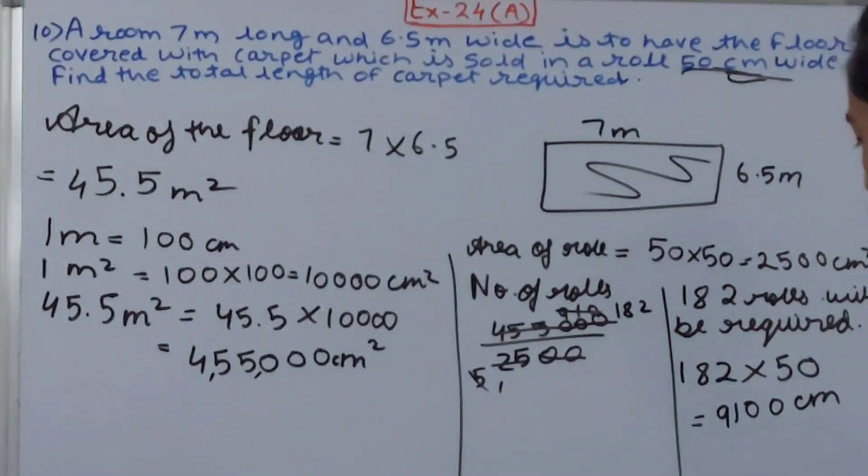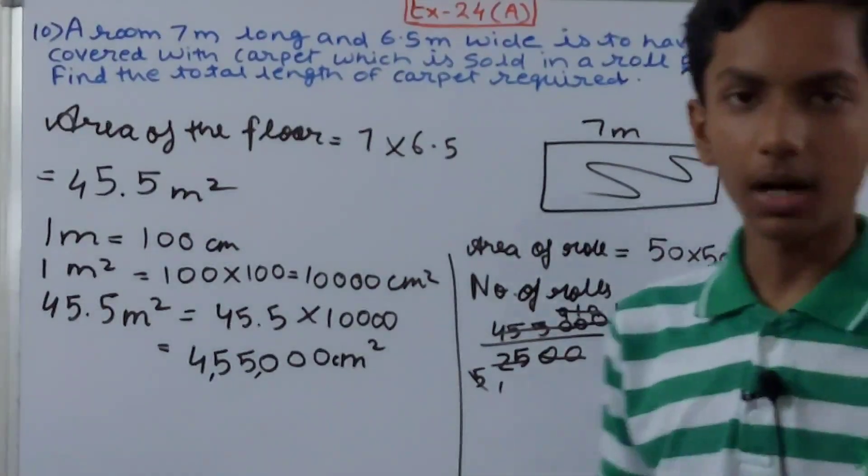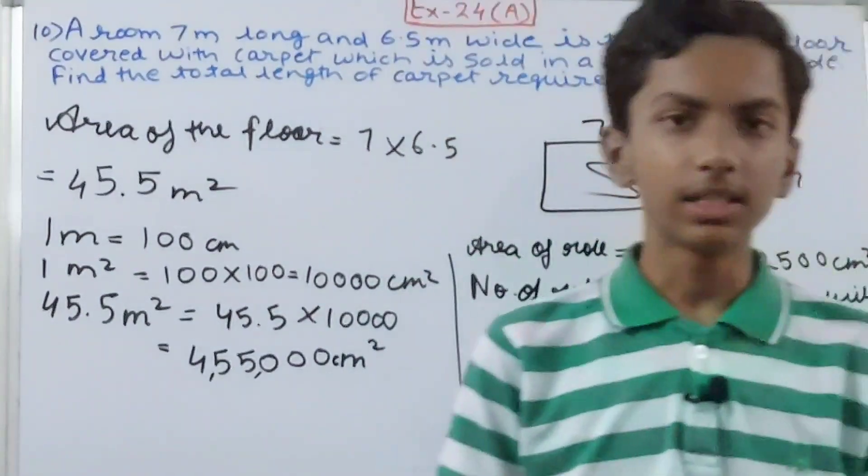Since units are in meters, we'll convert this answer into meters. You can write it this way, or you can write it in meters. That will be 91 meters. Two zeros will be cut, so 91 meters. This becomes the total length of the carpet.